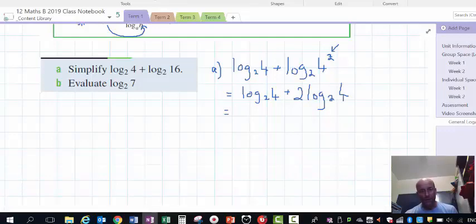You can see that we've got an algebraic sum here: one lot of log 4 to base 2 and two lots of log 4 to base 2 makes three lots of log 4 to base 2.